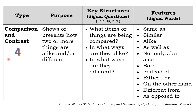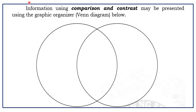The fourth type of informational text is Comparison and Contrast. Its purpose is to show or present how two or more things are alike and different. Signal questions include: What items or things are being compared? In what ways are they alike? In what ways are they different? Signal words include: the same as, similar, alike, as well as, not only but also, both, instead of, either/or, on the other hand, different from, and as opposed to. An example of the graphic organizer for this type is the Venn diagram.